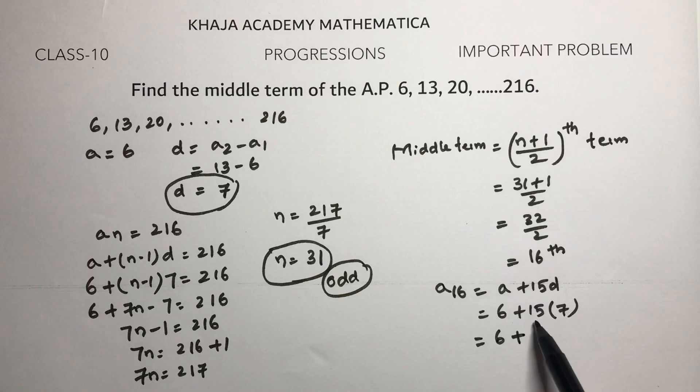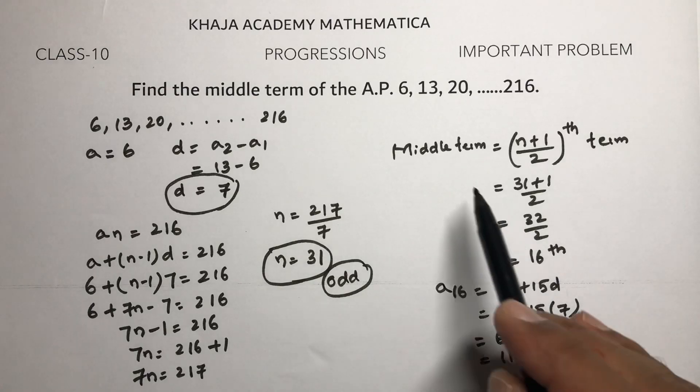That's 6 + 105 = 111. So the 16th term is 111, which is our middle term.